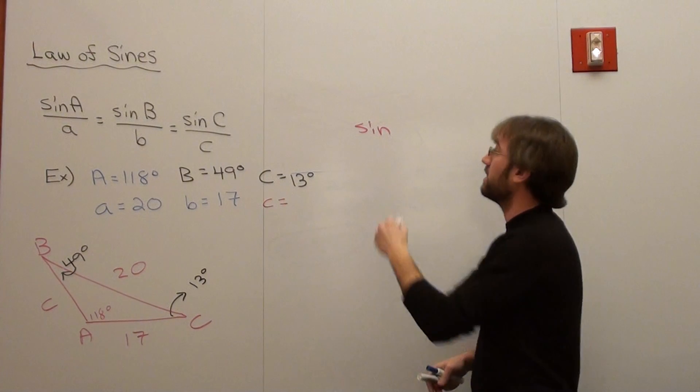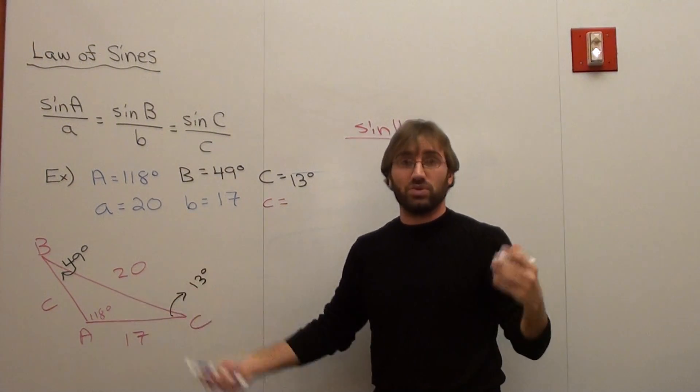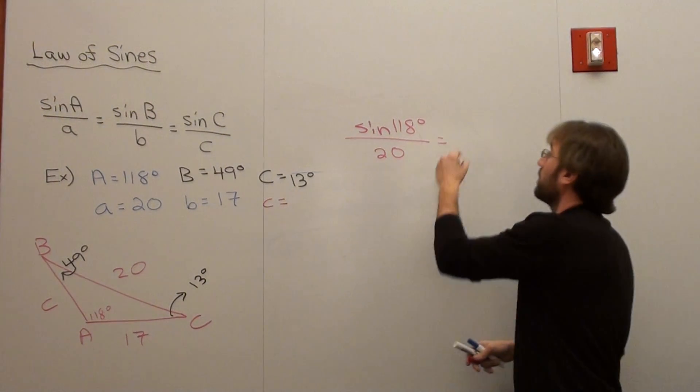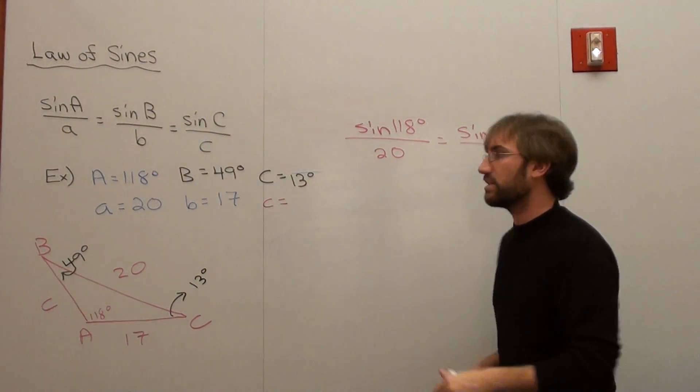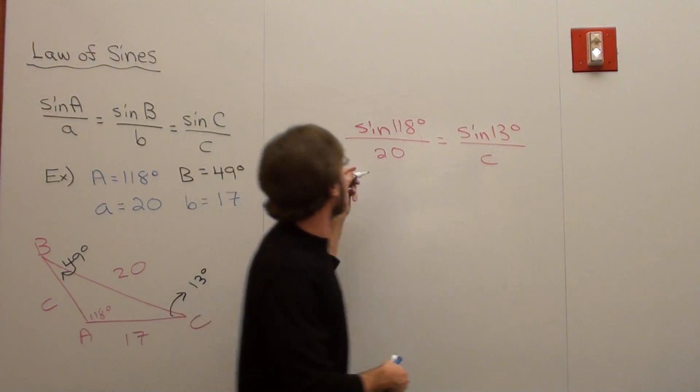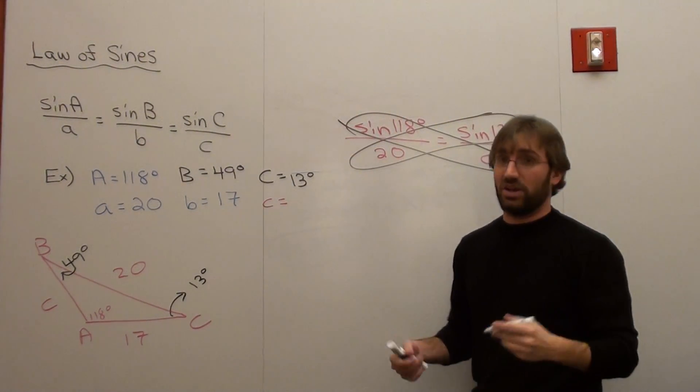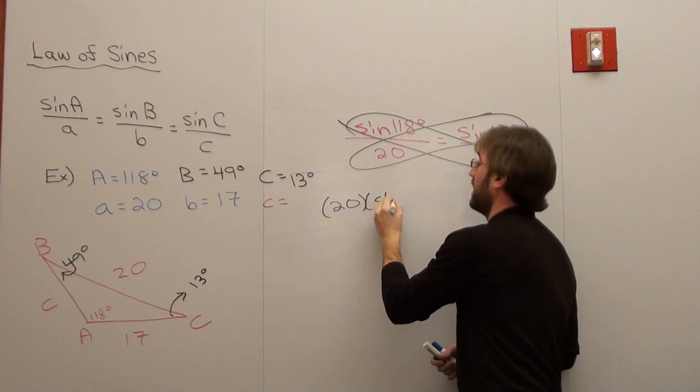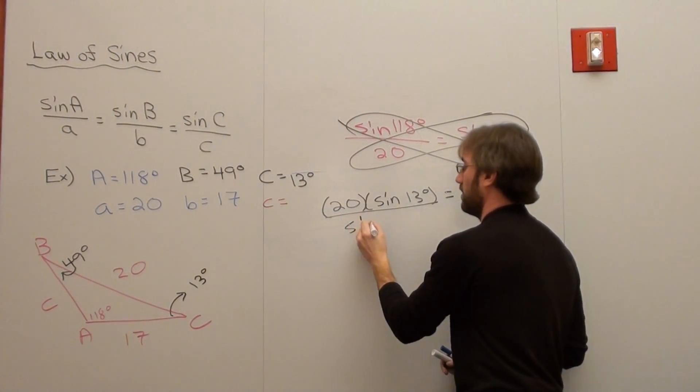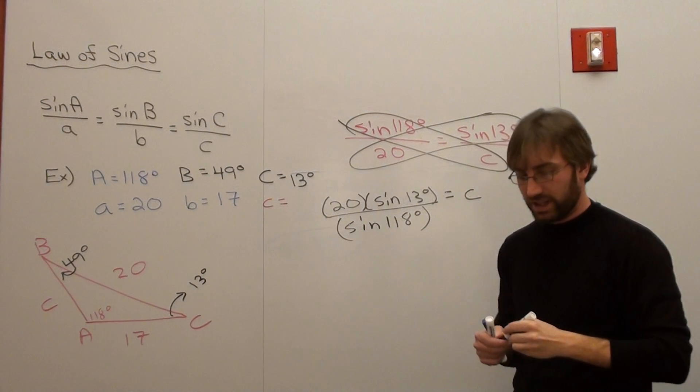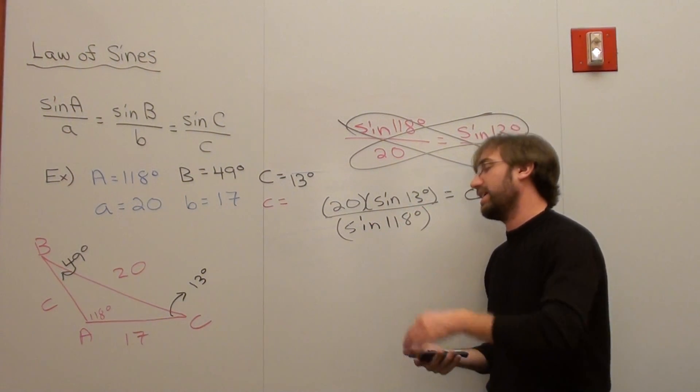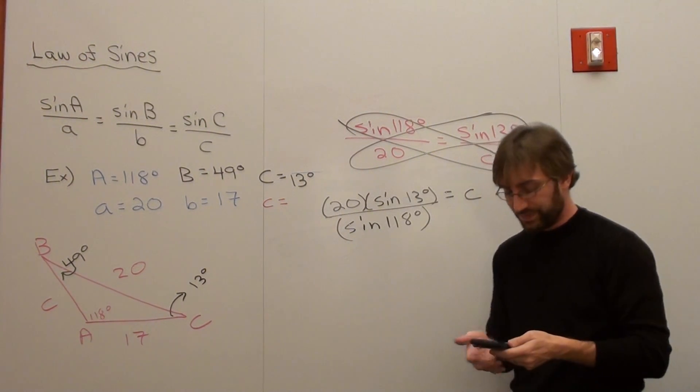So sine of A is 118 degrees over my corresponding side is 20 equals, and then I've got to figure out my C value. So sine of 13 degrees, it's not exactly 13 degrees but it's an approximation, and it's a pretty good one. And what I do to figure out my C in this case is I cross multiply. I'm a little lazy when it comes to this. I would do 20 times sine of 13 degrees equals C times sine of 118. But I know I have to divide by sine of 118. And then what I would do when I plug this into my calculator is I'd actually do sine of 13 degrees, figure out what that is, then multiply it by 20, and then divide by sine of 118.